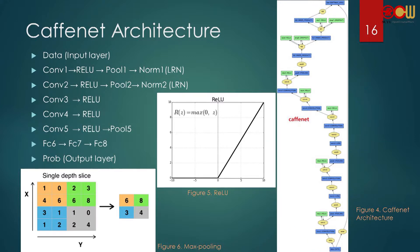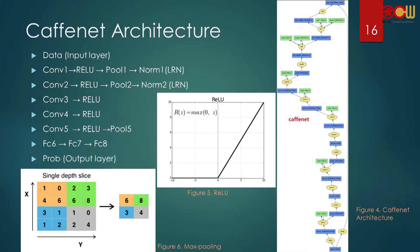Now I'll explain what the convolution layers do. In the convolution layers, after we train, there are many learned features. In the first stage — like convolution 1 layer — the features are basic. As we go deeper, the features become more complex.